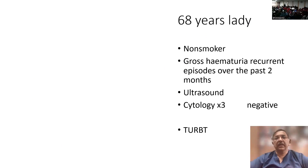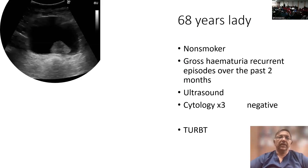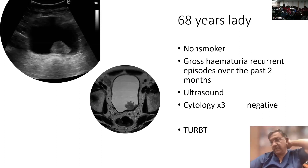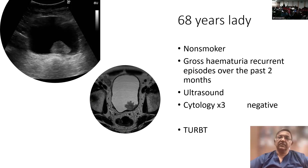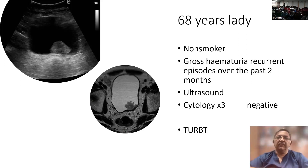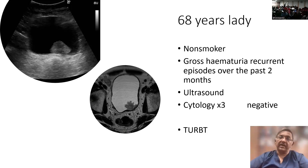Another case: a 68-year-old lady, non-smoker, with gross hematuria — recurrent episodes over the past two months. Ultrasound showed a posterior wall growth, looking rather solid. Cytology times three was unremarkable. She underwent MRI scan as well, which shows a papillary configuration of the growth, and you can very clearly see the layers of the bladder. MRI scan is becoming the new standard in evaluation of bladder cancer patients, as you can do VI-RADS categorization and differentiate T1 from T2 and T2 from T3 tumors.